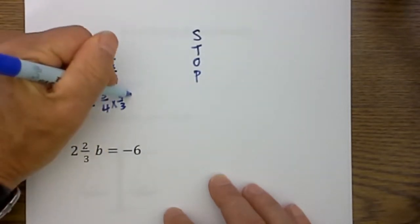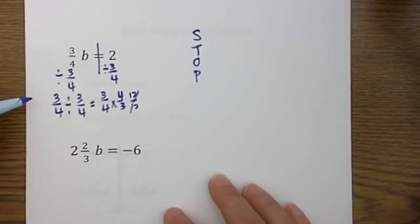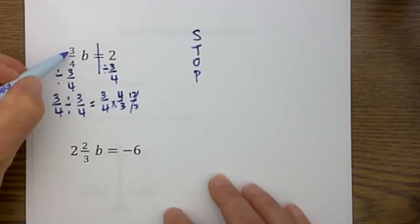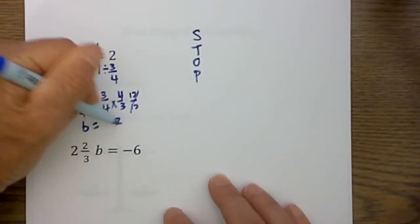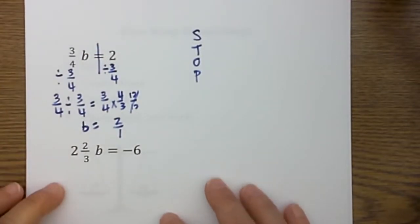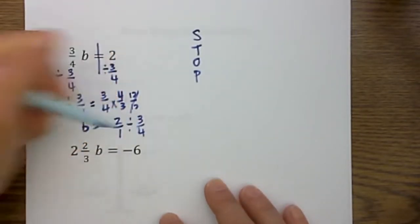And you know 3 times 4 is 12, 4 times 3 is 12 and so it cancels. And so any time you multiply a fraction by its reciprocal it becomes 1. So the shortcut, I will show the shortcut on the next one, it may get a little confusing. So let's bring the b down because the fraction is cancelled and now I have b is equal to 2, and I am going to write it 2 over 1 divided by 3/4.